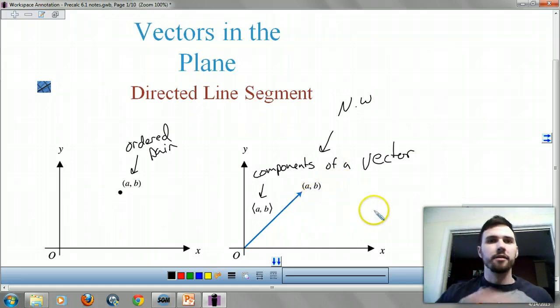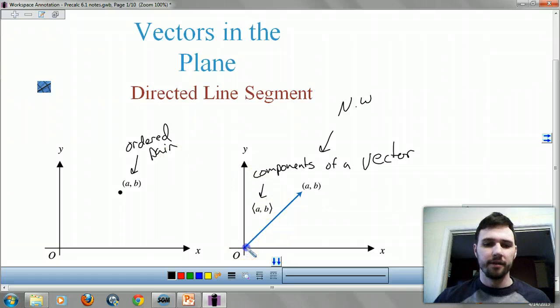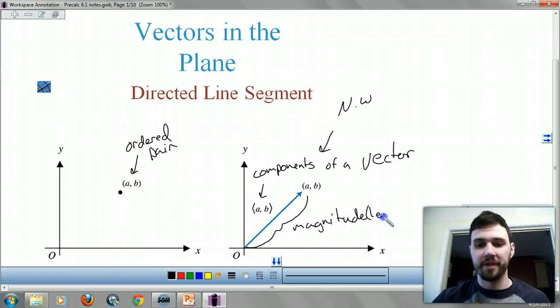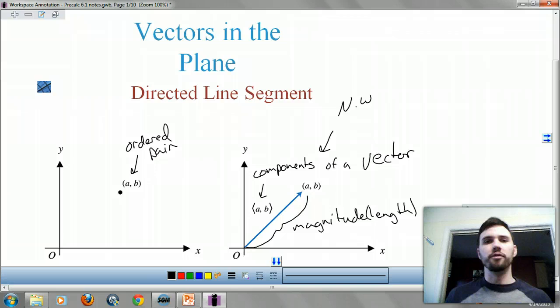A vector denotes direction and magnitude. So this is magnitude. Magnitude is a fancy term for length. So it gives you a direction, a length, and an ordered pair.